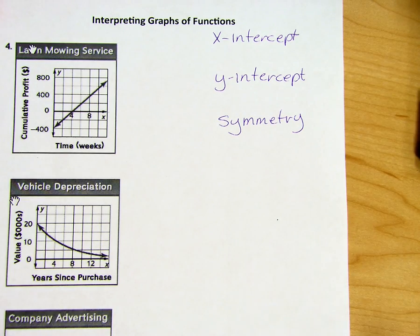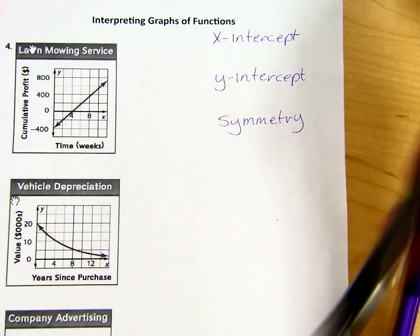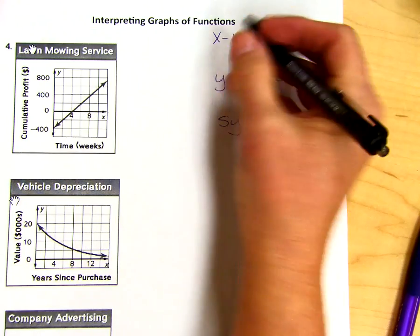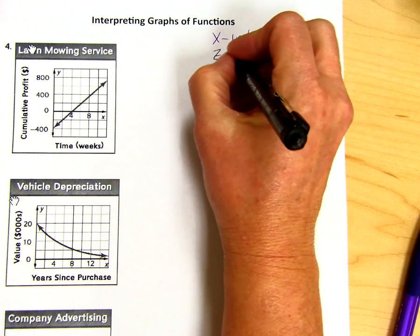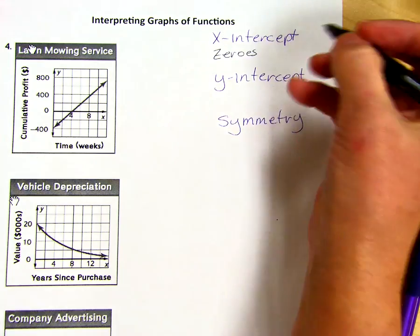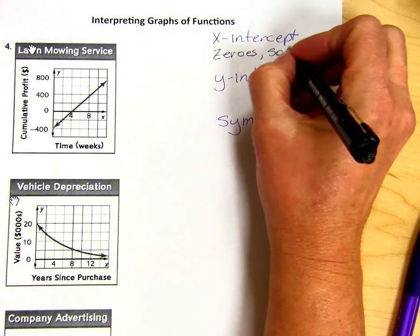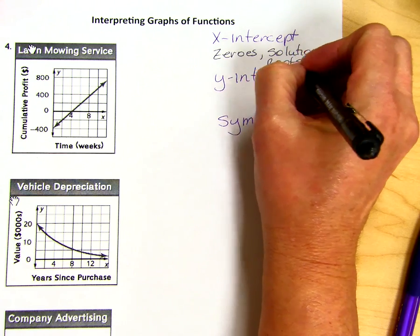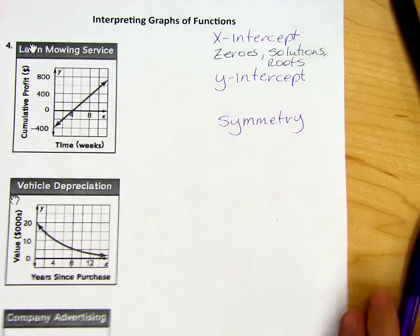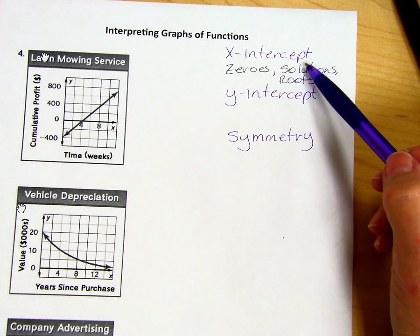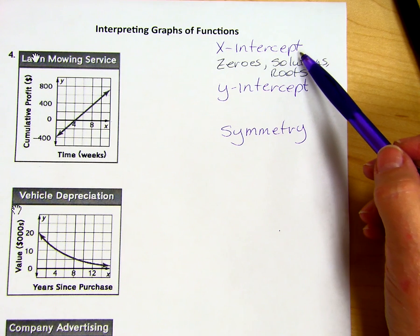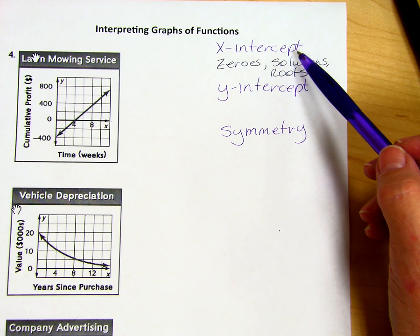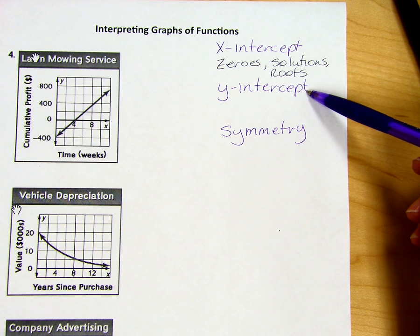The x-intercept also has other names that it goes by. We also call that zeros, solutions, and roots. So x-intercept, as the name implies, is where the graph intercepts the x-axis. The y-intercept, same thing, is where your graph will intersect the y-axis.